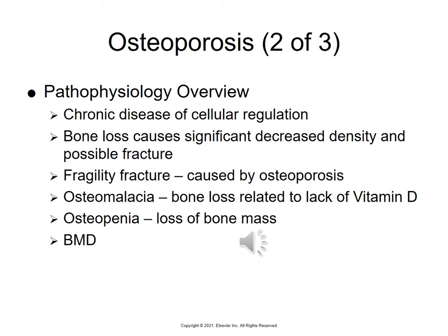Osteoporosis is a chronic disease of cellular regulation with decreased bone mass due to loss of calcium. It is a chronic metabolic disease in which bone loss is significant, causing decreased density and possible fracture. A fracture that typically happens due to osteoporosis is called a fragility fracture — where the bone has grown so weakened that just getting up from a chair or walking may cause it to fracture. The bone just crumbles. Osteomalacia is bone loss related to lack of vitamin D, and osteopenia is a loss of bone mass.